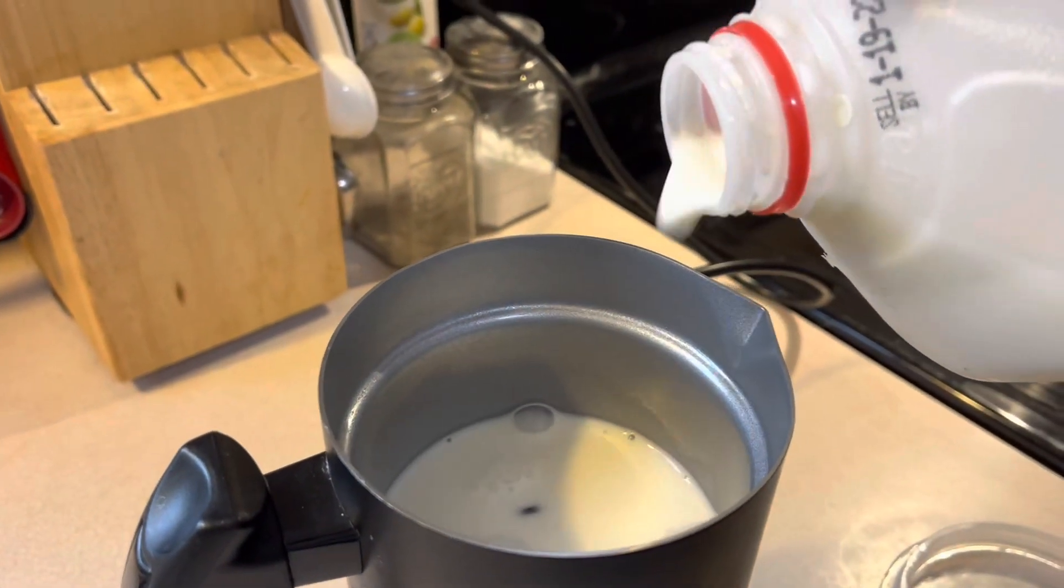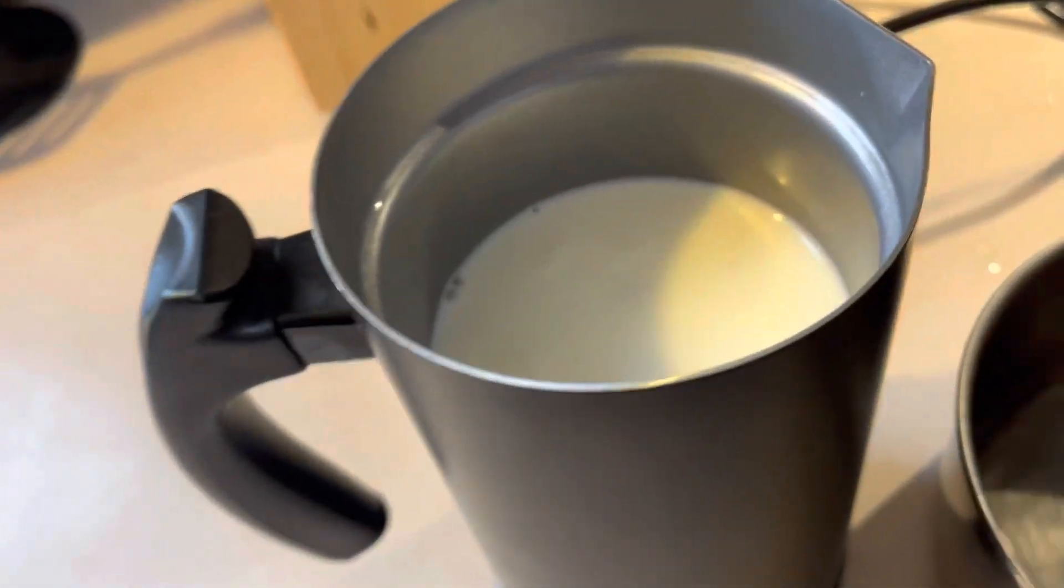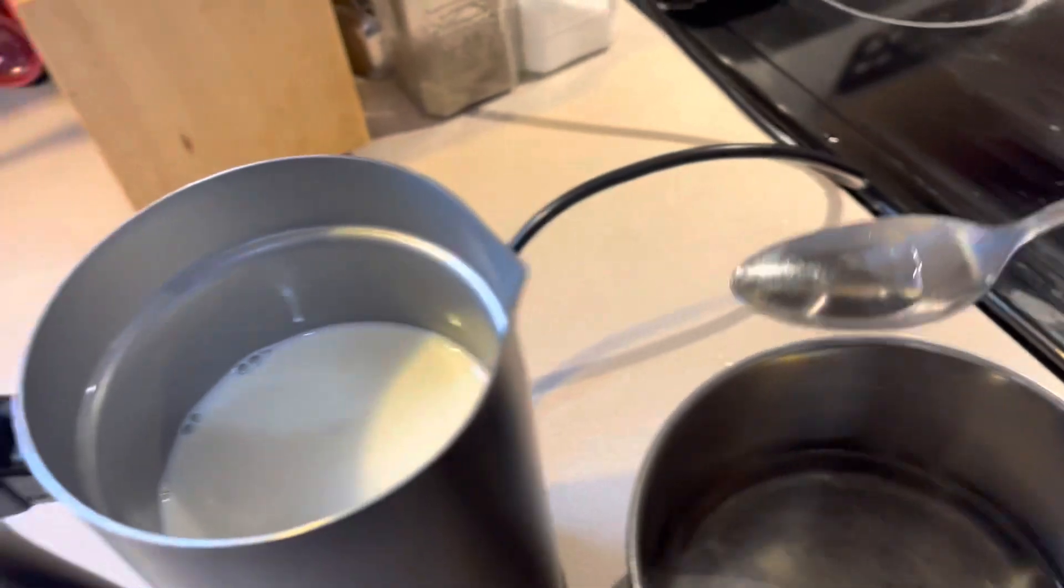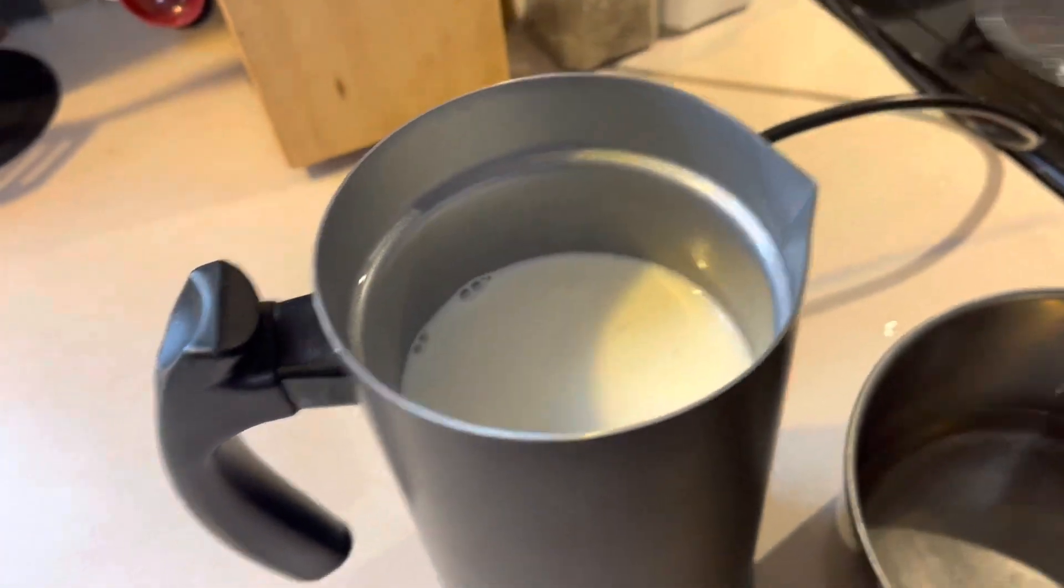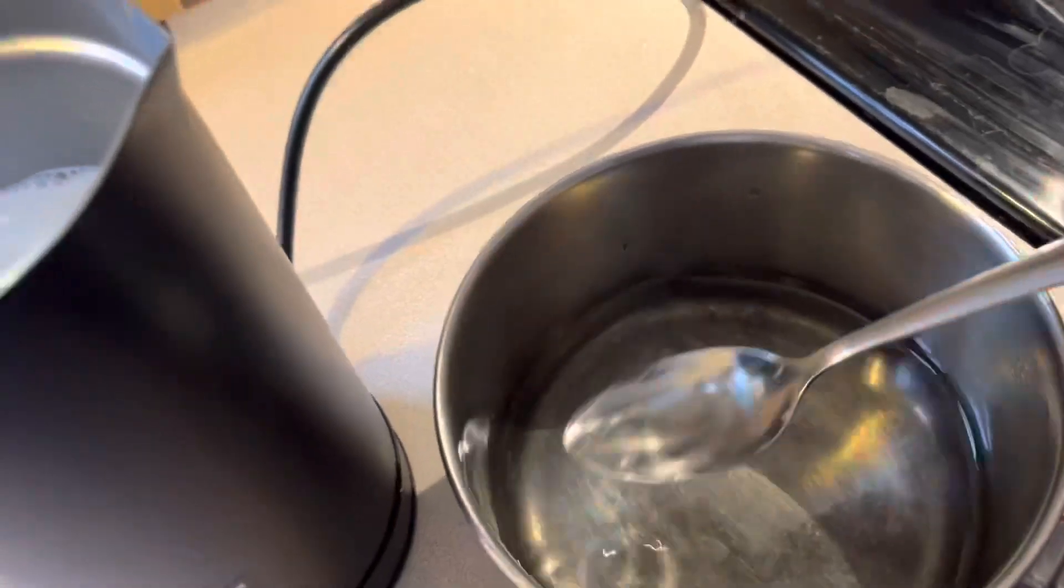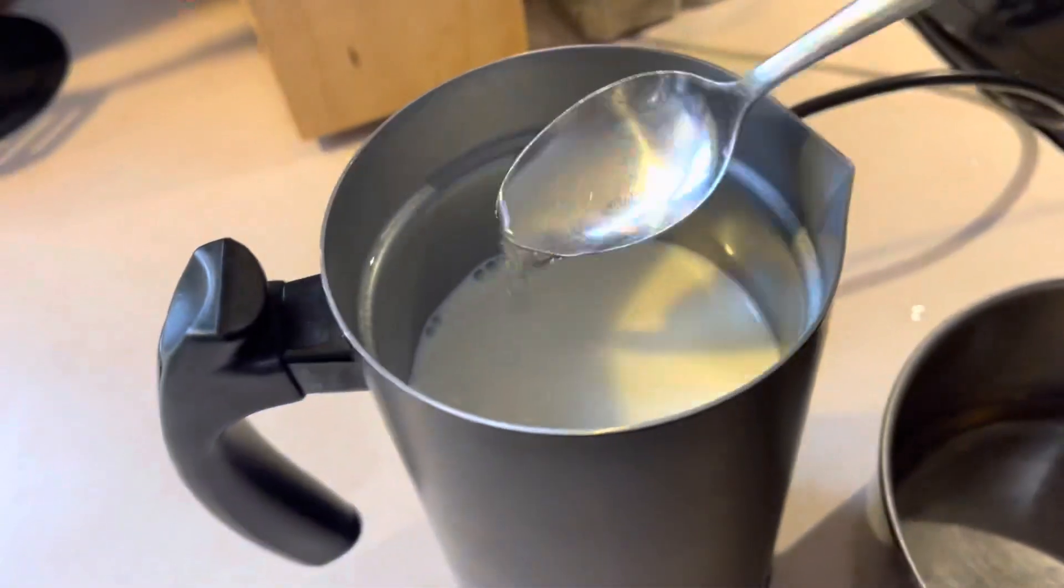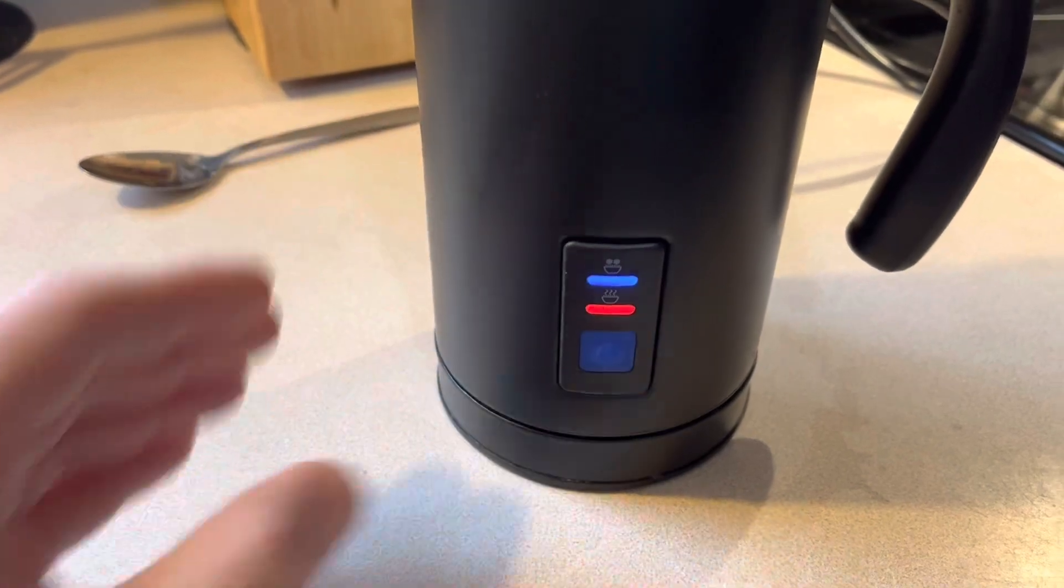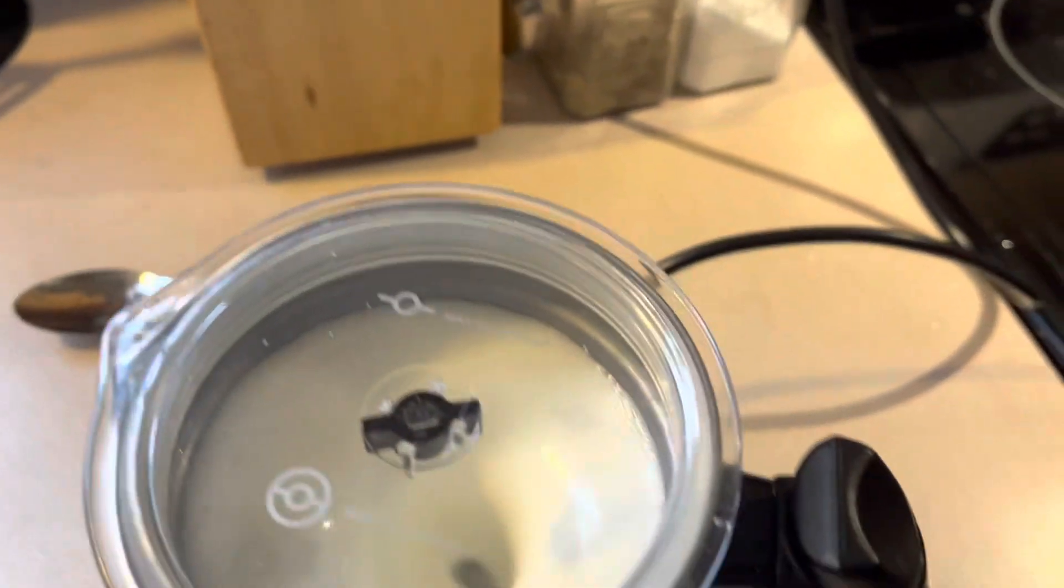Then, pour in milk in your milk frother. Just cover up the mechanism and drop in four teaspoons of the peppermint simple syrup that you have just made. Once you've done that, close it and turn it on. Make sure it's on the heat setting.